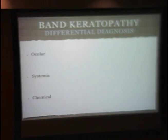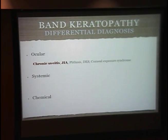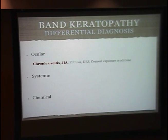I like to think of the differential diagnosis in three main categories: ocular, systemic, and chemical. With respect to ocular, I think of sick eyes — chronically inflamed eyes that are going to alter the pH and lead to calcium precipitation. So chronic uveitis is classically associated with band keratopathy, additionally JIA, enthesitis, and diseases that affect tear evaporation such as dry eye syndrome and corneal exposure.